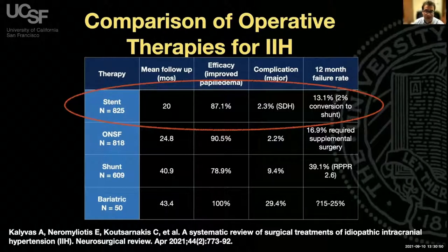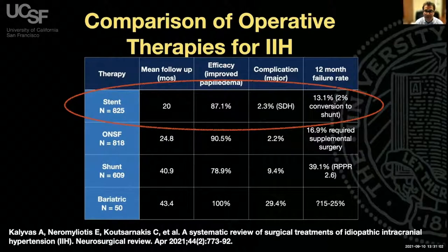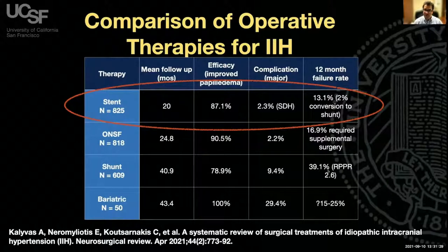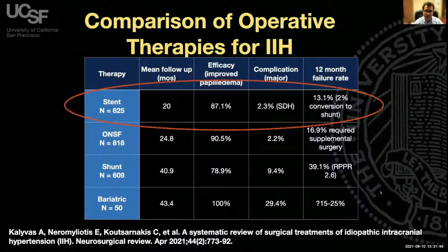Venous sinus stenting has been evaluated in over 825 patients, making it the most heavily researched surgical intervention for IIH. It has an efficacy for papilledema of nearly 90%, with a 2.3% risk of subdural hemorrhage, most of which is well-tolerated, and a stent failure rate of about 13%, requiring a second procedure. The majority fail within the first year. Compared to shunting's 40% failure rate, with venous sinus stenting most failures happen within the first six months, so patients are typically cured after a year.